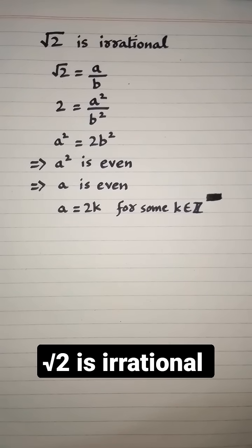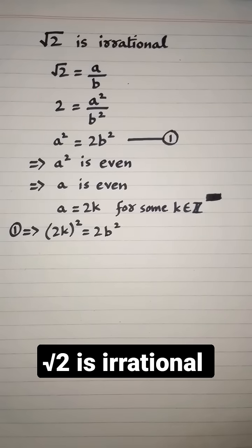So a equals 2k for some k belongs to integers. Equation 1 implies 2k² equals 2b², so 4k² equals 2b², or b² equals 2k².